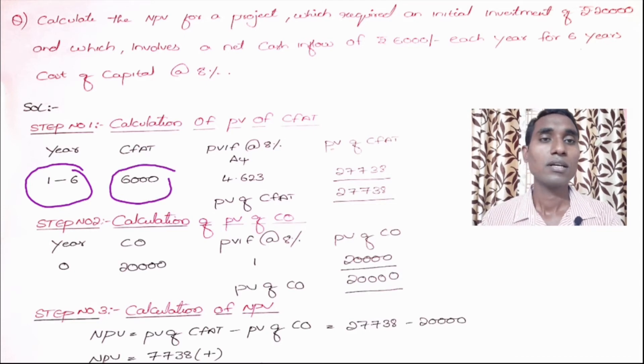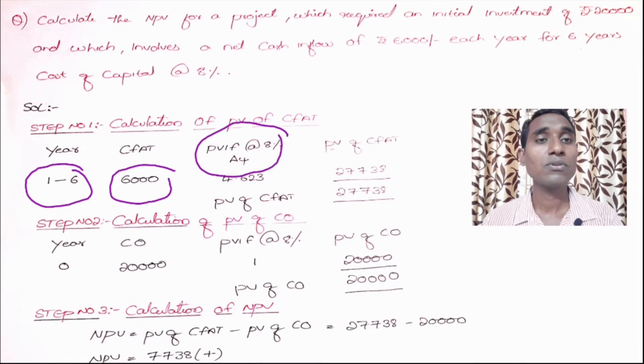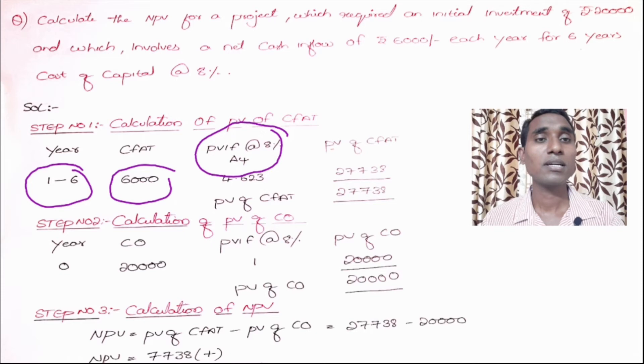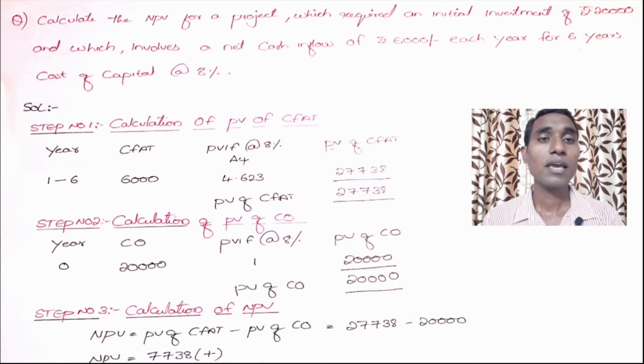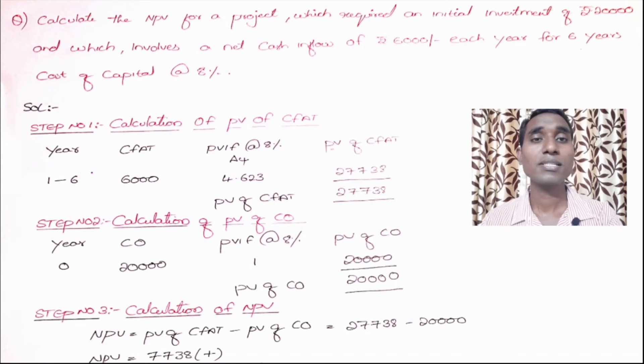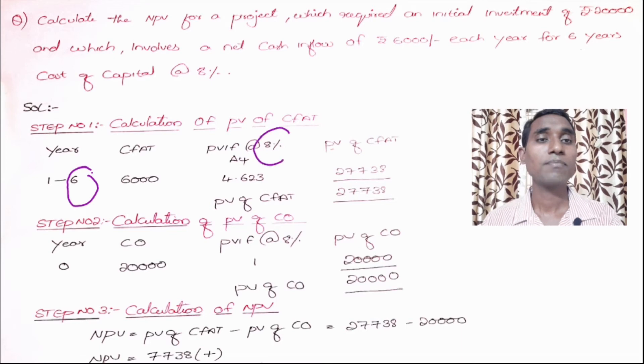The most important difference is when cash inflows are constant. If you want to use this method, you need to see the A4 table, not the A3 table. That is the main difference. In the A4 table you need to look into the sixth year at 8%.